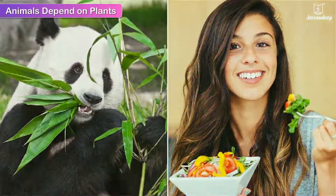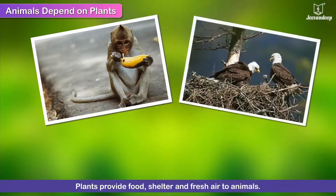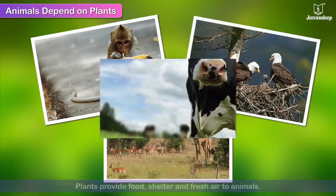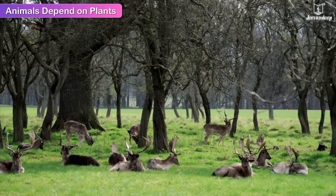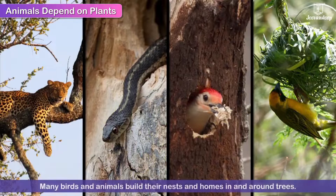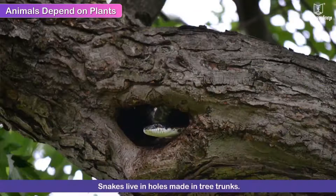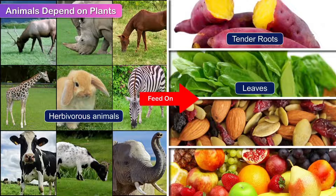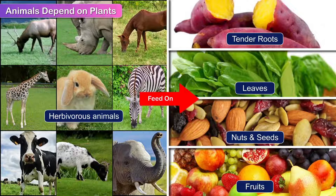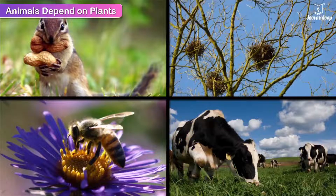Animals depend on plants for food, shelter and fresh air. Animals breathe in oxygen that is released by plants during photosynthesis. That is why you will always find animal life wherever you find plant life. Many birds and animals build their nests and homes in and around trees. Snakes live in holes made in tree trunks. Herbivorous animals feed on the tender roots, leaves, nuts, seeds and fruits of plants. This is called the interdependence of plants and animals.